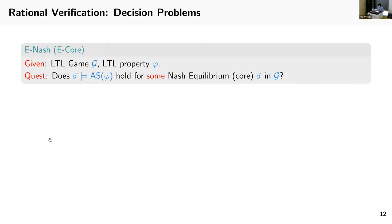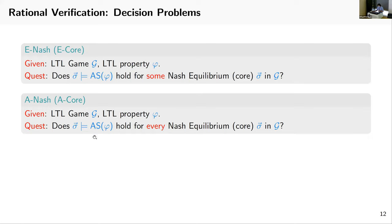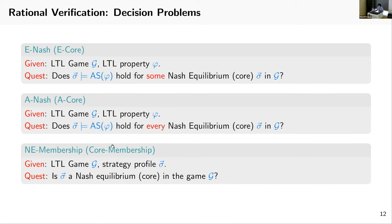In rational verification, we have some decision problems. First we have E-Nash and E-Core. For a given game and LTL property φ, we ask whether there exists some Nash equilibrium or some core such that it satisfies the property. We can also ask the dual: instead of for some, we ask for every Nash equilibrium or every core. Lastly, we have membership. We are given game G and strategy profile σ, and we ask whether σ is a Nash equilibrium or a core in game G.